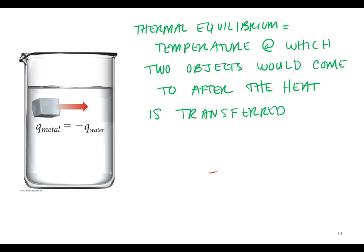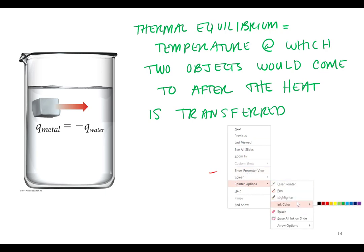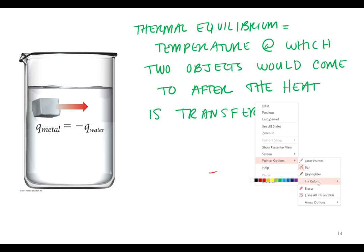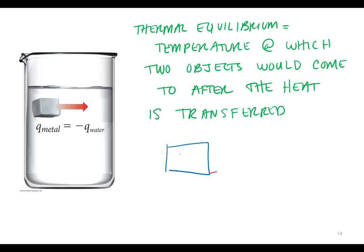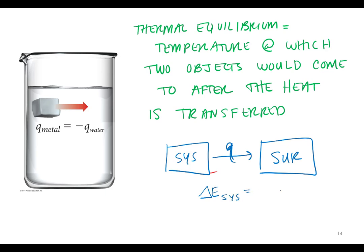So Q_metal equals Q_water. This is the same as our system relationship: if we transfer only heat, the change in energy of the system equals the change in energy of the surroundings, but opposite in sign. If something loses 50 joules (negative 50 joules), the other thing gains 50 joules (positive 50 joules). The heat of the system equals the heat of the surroundings, but opposite in sign.